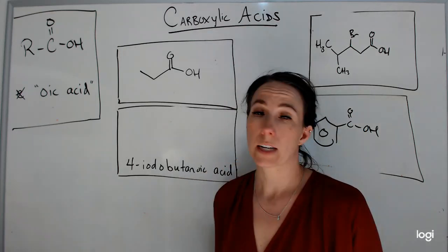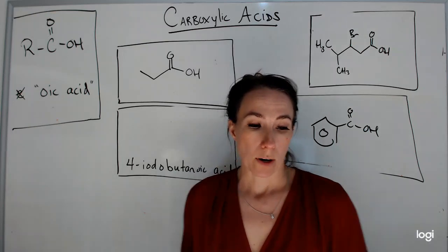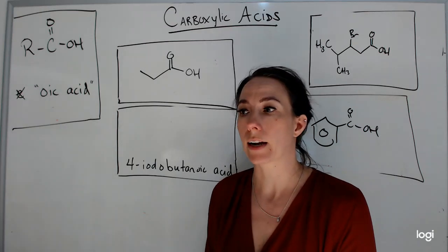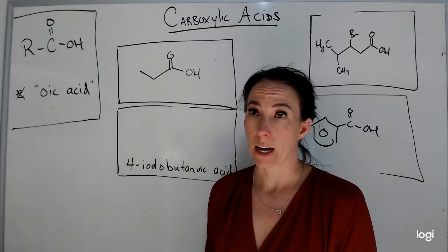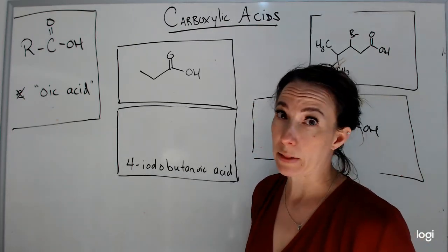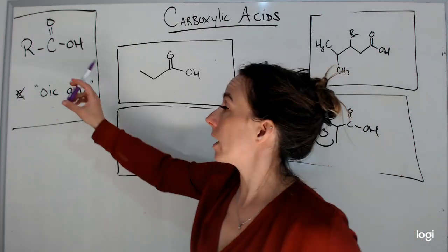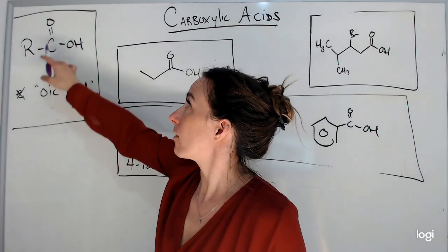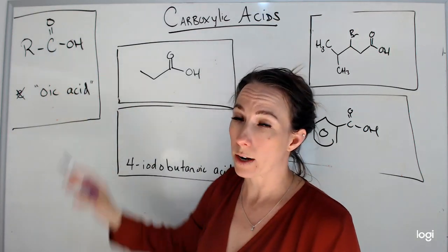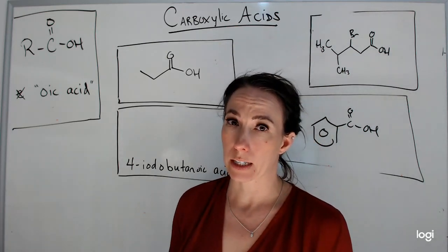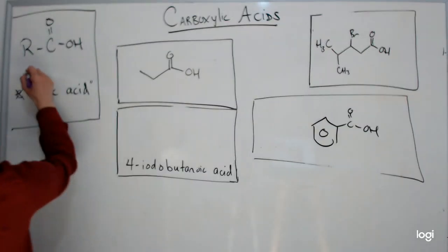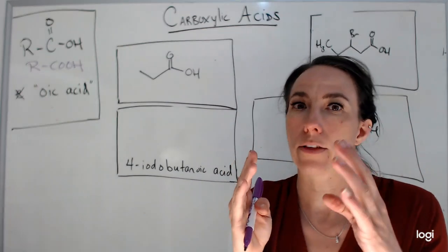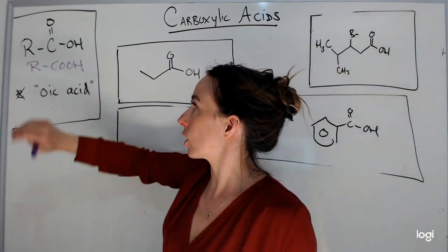The next hydrocarbon derivative we're going to name are carboxylic acids. Carboxylic acids are weak acids, and in our next unit of organic chemistry we'll look a lot at these weak acids, but for now we're just going to learn how to name them. If I have my hydrocarbon chain and then I have C double bond O, OH at one end, this makes it a carboxylic acid. This COOH is sometimes written condensed together — it's the same thing, and that's a carboxylic acid.